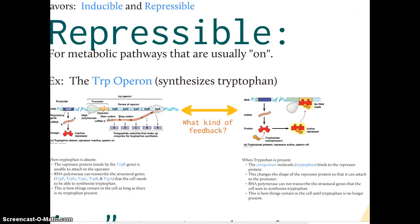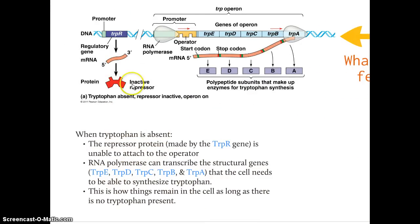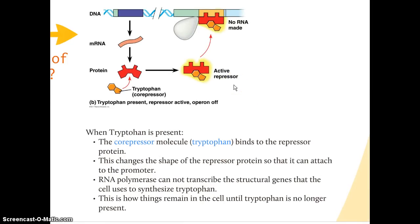The next type is the repressible operon. To repress means to stop or prevent, so repressible operons are usually switched on and making some product, but they can be switched off. The classic example is the trp operon, meaning tryptophan. Since bacteria constantly need some level of tryptophan, they're constantly producing it, so the operon is normally on. The repressor starts in an inactive form and won't attach to the operator, so RNA polymerase docks at the promoter and transcribes the genes needed to make tryptophan.